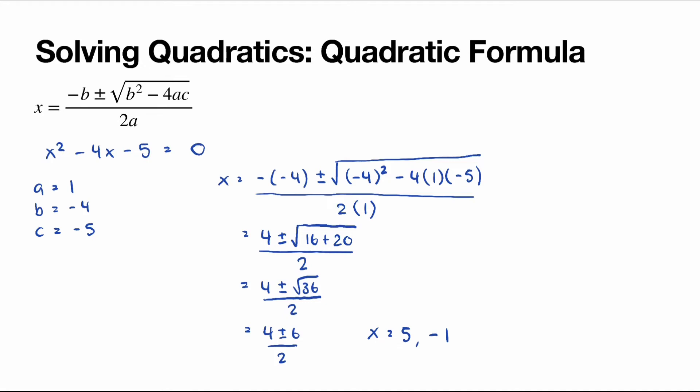Just like in the previous videos, we can check these results by substituting x equals 5 and x equals negative 1 into x squared minus 4x minus 5 and verifying the result equals zero.